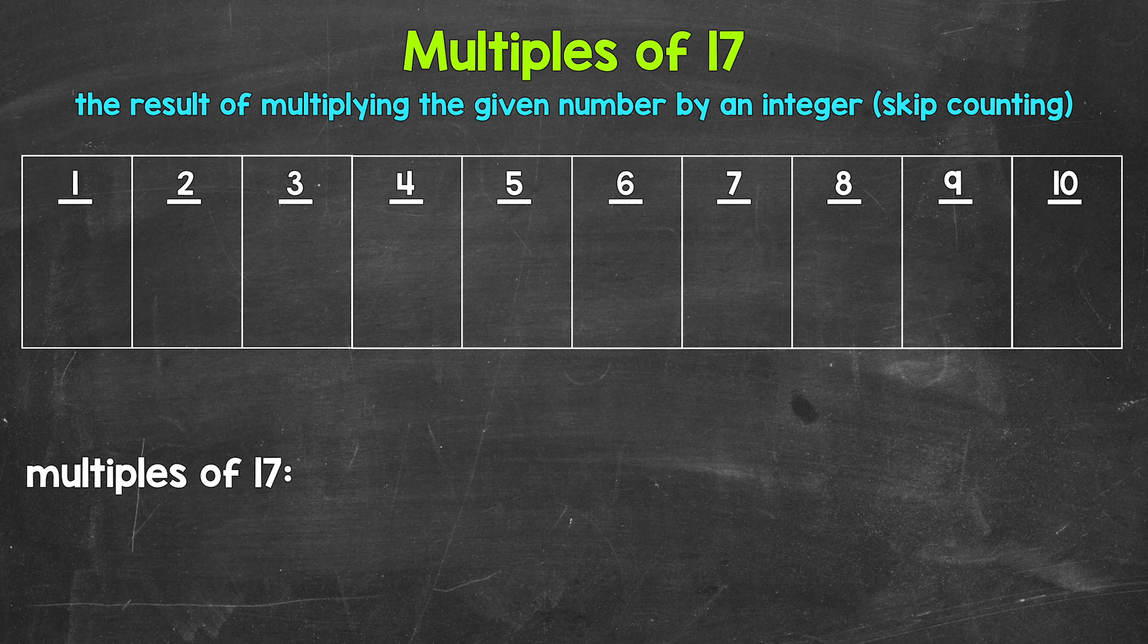Now remember, a multiple is the result of multiplying the given number by an integer. So 1 times 17, 2 times 17, 3 times 17, so on and so forth.